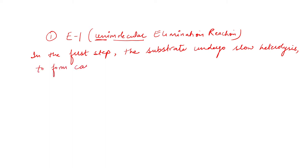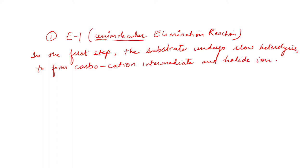In the first step, a carbocation is generated as an intermediate, and one halide ion is also formed — the halogen which was more electronegative took the extra electron and left, so it has a negative charge, that's why we write it as halide. This first step is the slow rate-determining step. The rate of reaction is determined from this step.